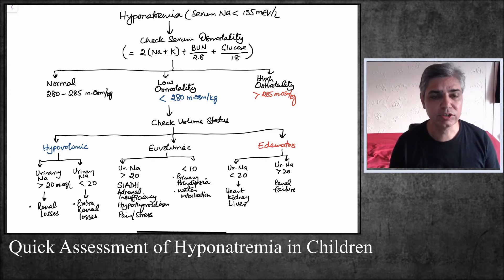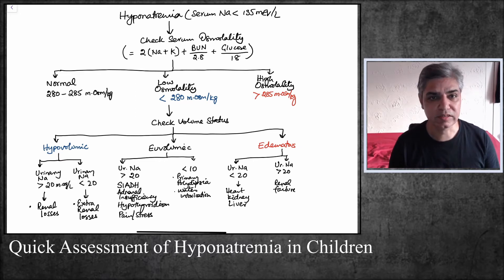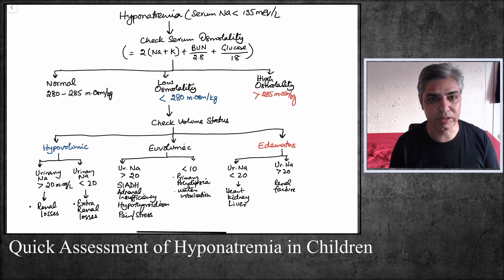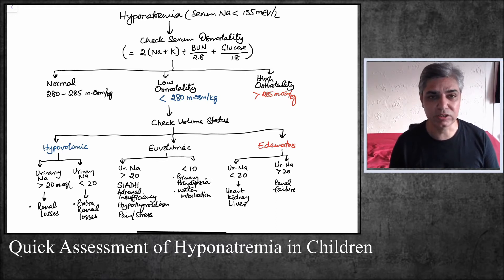Let's start with the definition. Hyponatremia is a condition in which the serum sodium is less than 135 milliequivalents per liter. There are different definitions — some books take the lower limit as 133, some as 130 — but most textbooks use 135 mEq/L. So if you do a blood gas or serum electrolytes and the child's sodium is less than 135, that would be classified as hyponatremia.